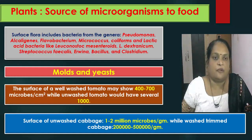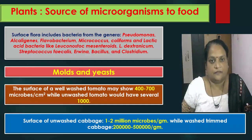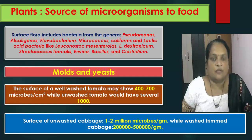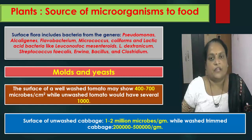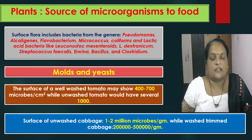The surface flora includes bacteria from different genera, for example Pseudomonas, Alcaligenes, Flavobacterium, Micrococcus, coliforms, and lactic acid bacteria like Leuconostoc mesenteroides, Leuconostoc dextranicum, Streptococcus faecalis, Erwinia, Bacillus and Clostridium. The surface flora also includes moulds and yeasts.